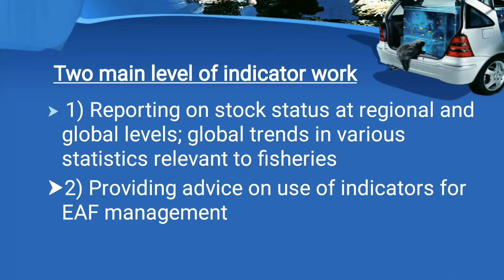Two main levels of indicator work are: reporting on stock status at regional and global level, and global trends in various statistics relevant to fisheries; and providing advice on the use of indicators for the ecosystem approach to fishery management. So the two main levels of indicators are reporting on stock status and providing advice on use of indicators for ecosystem approach to fishery management.